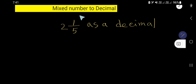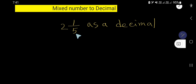How to convert a mixed number to decimal. Two and one fifth is the mixed number, and we would like to convert this mixed number to decimal — that is, two and one fifth as a decimal.